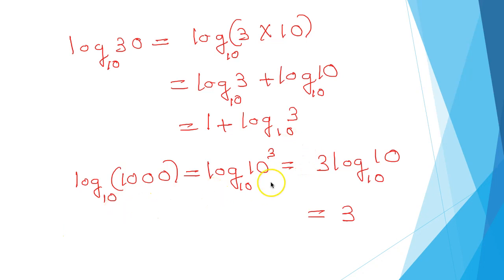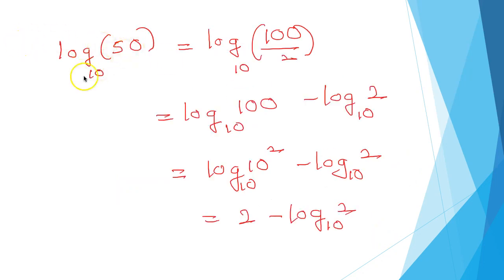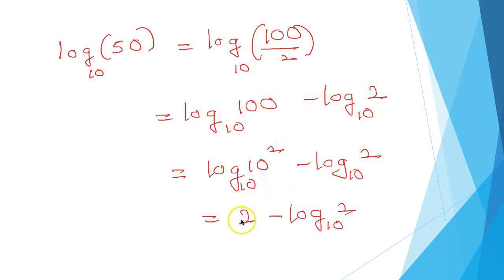Log 1000 to the base 10 is log 10 cubed to the base 10, that is 3 log 10 to the base 10, which equals 3. Log 50 to the base 10 is log 100 divided by 2 to the base 10, that is log 100 to the base 10 minus log 2 to the base 10. Since 100 is 10 squared, this is 2 log 10 to the base 10, which is 2, giving 2 minus log 2 to the base 10.